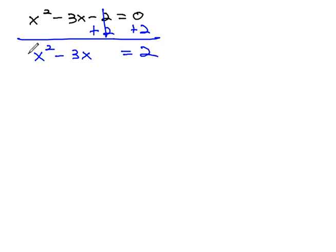Our next step normally would be to get rid of anything in front of x squared. In this case, we don't have a number in front of x squared, so we can now move on to completing the square.